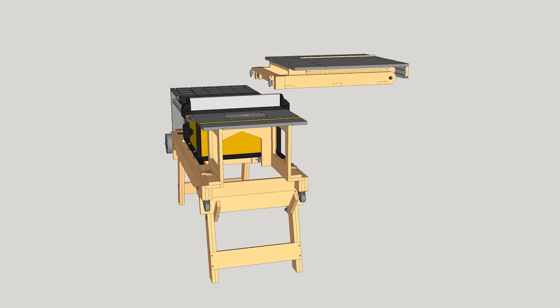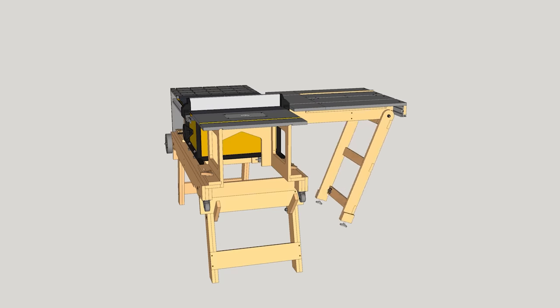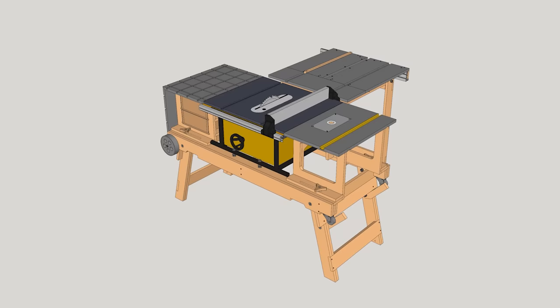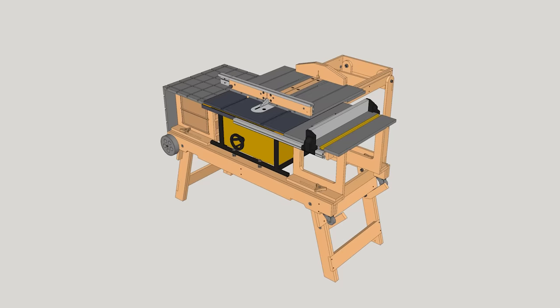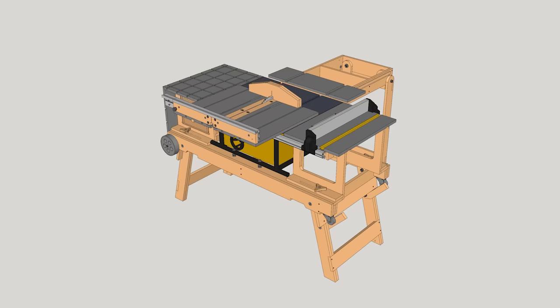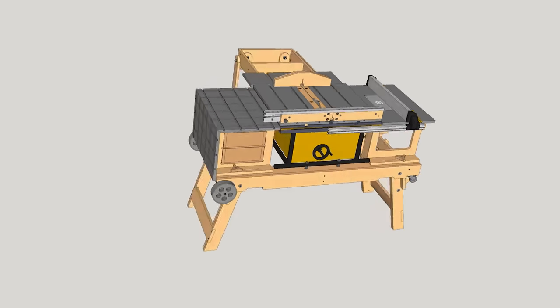This is the 3D Sketchup file included in the plans available on my website. In this animation, you can see the system I've come up with to store the crosscut sled by flipping it and putting it on top of the outfit table, to keep it handy at all times.